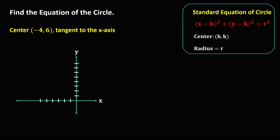For this problem, we again need to graph the given. x is negative 4 and y is positive 6, counting 1, 2, 3, 4, 5, 6 — so this is positive 6. This is now the point of the center.